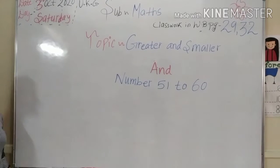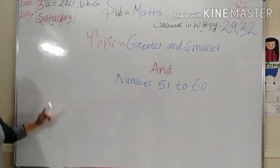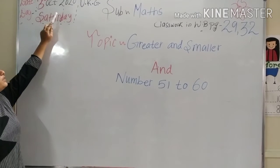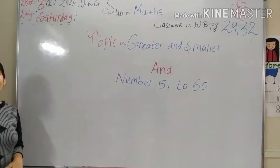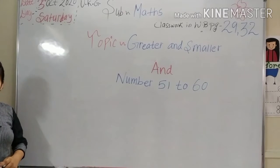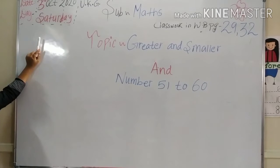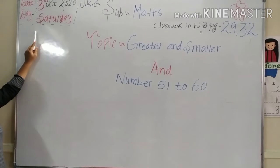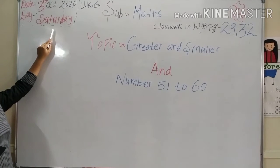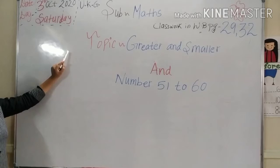First of all, which date is today kids? Yes, 3rd October 2020. And which day is today kids? Yes, it's Saturday. Saturday ki spelling kids, repeat with me: S-A-T-U-R-D-A-Y. Saturday.